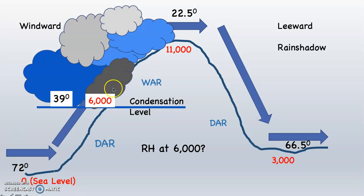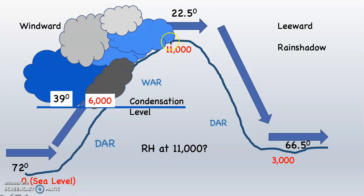The relative humidity at 6,000 feet on the windward side — is there a cloud forming? Yes. 6,000 feet is the condensation level. If there's a cloud forming, what does the relative humidity have to be? 100%. What about the relative humidity at 11,000 feet? Let's assume the cloud is up there at 11,000 feet. If the cloud is at 11,000 feet, what's the relative humidity? 100%.